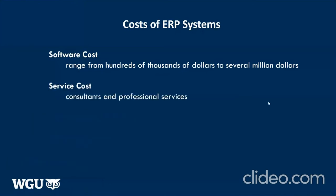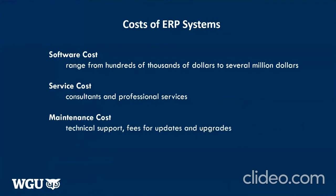Secondly, there is service cost. Companies implementing an ERP system will have to hire outside consultants and professional services to help with software selection and configuration. These service costs can include training, customization, and implementation. Another cost is maintenance — those systems have to be maintained. Like software updates on your cell phone, maintenance costs involve technical support fees and fees for upgrades and bug fixes, which occur year after year.